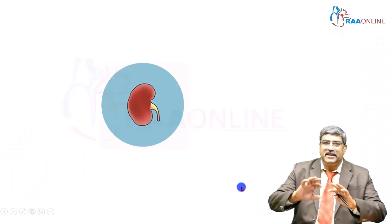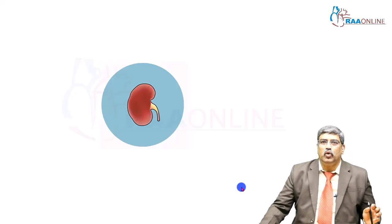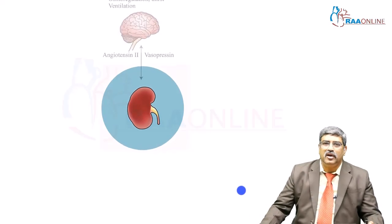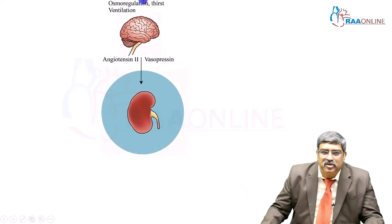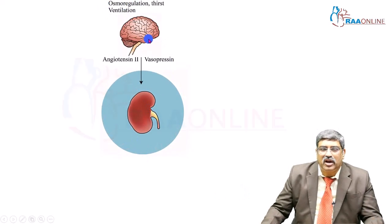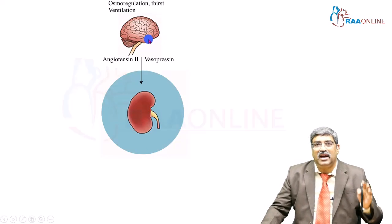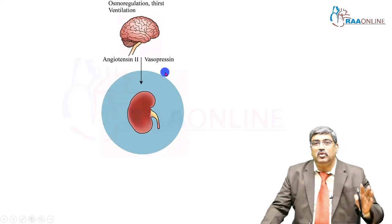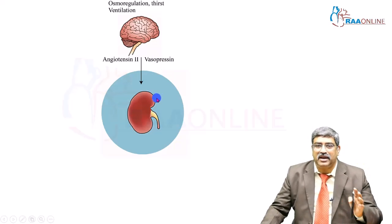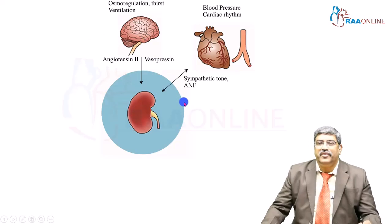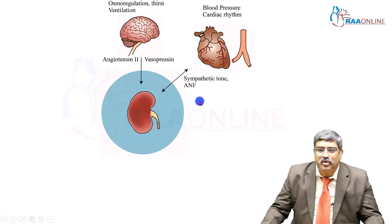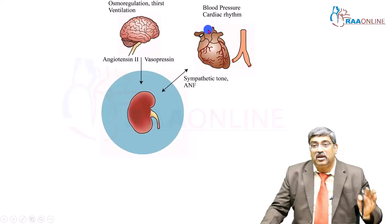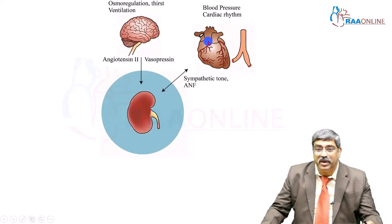To summarize in a different way — combining the kidney with various systemic organs. With regard to the brain, osmoregulation will be altered, and thirst and ventilation might differ. This might be mediated by angiotensin 2 and vasopressin — the connection between the kidney and the brain. With regard to the heart, through sympathetic tone and atrial natriuretic factor, there might be hypotension or hypertension, and the rhythm might be altered.